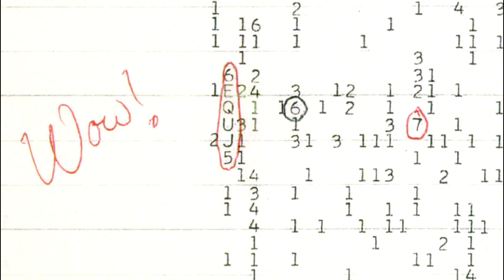Astronomer Jerry Amon discovered the anomaly a few days later while reviewing the recorded data. He was so impressed by what he saw that he circled the reading on the computer printout and wrote the comment WOW in bold letters in the margin, leading to the event's widely used name. The entire signal sequence lasted for the entire 72-second window during which the Big Ear was able to observe it. However, despite more than 50 attempts since, it's never been detected again.